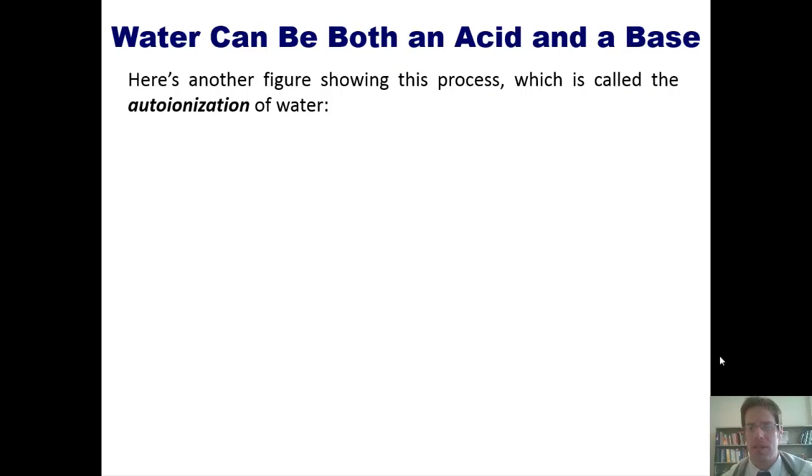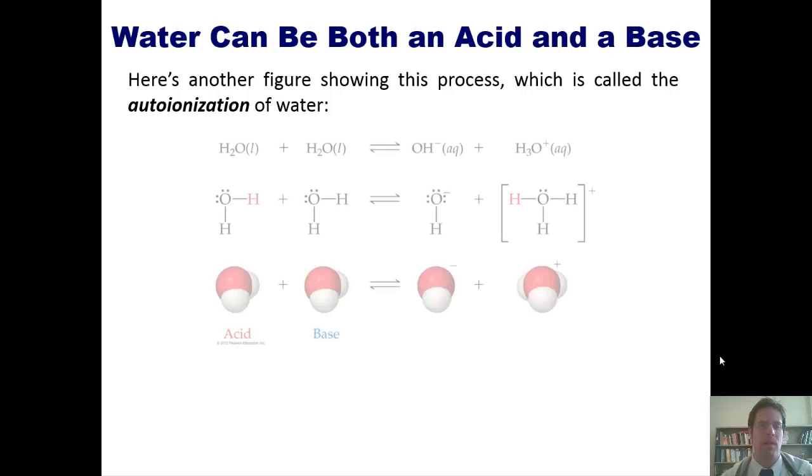Here's another figure showing this process, which is called the autoionization of water. We can imagine pictorially this water molecule giving up its hydrogen to its neighbor. The neighbor then becomes hydronium H3O+, and leaves hydroxide behind. Once again, this water molecule is the acid because it gave up a hydrogen, while this water molecule is the base because it accepted the hydrogen. And by extension, this is the conjugate base, and this is the conjugate acid.